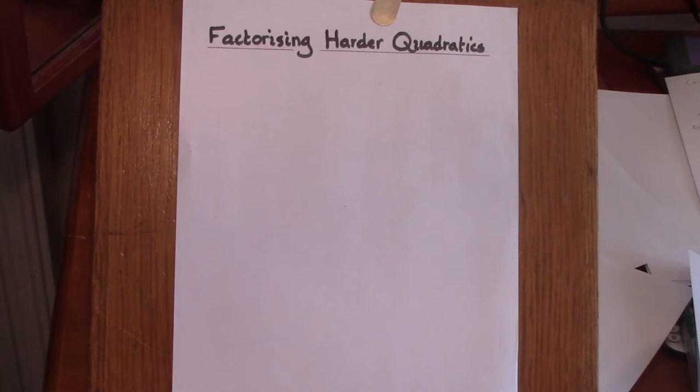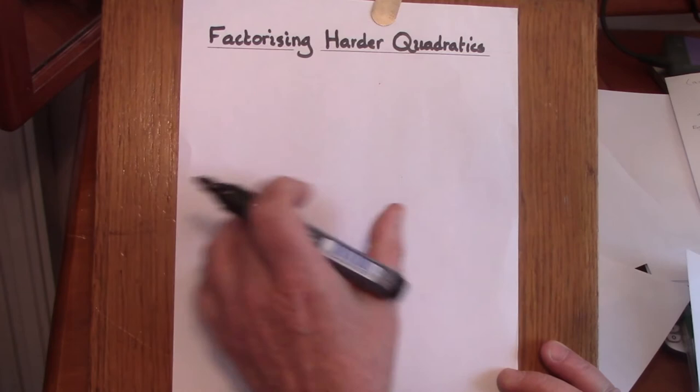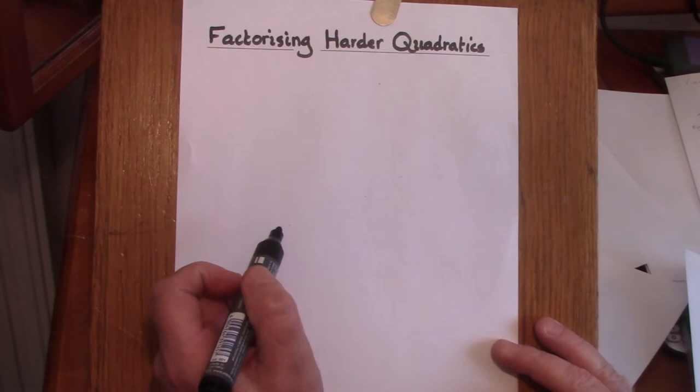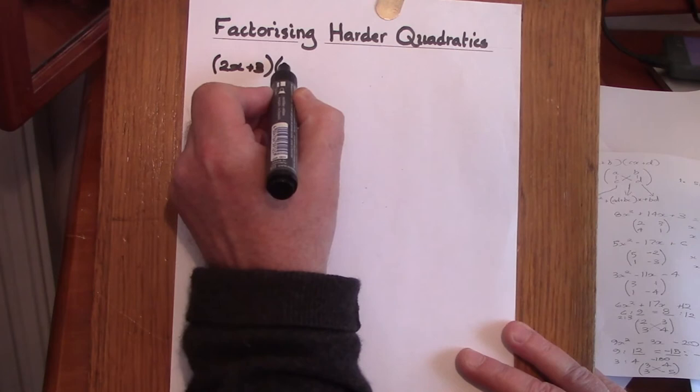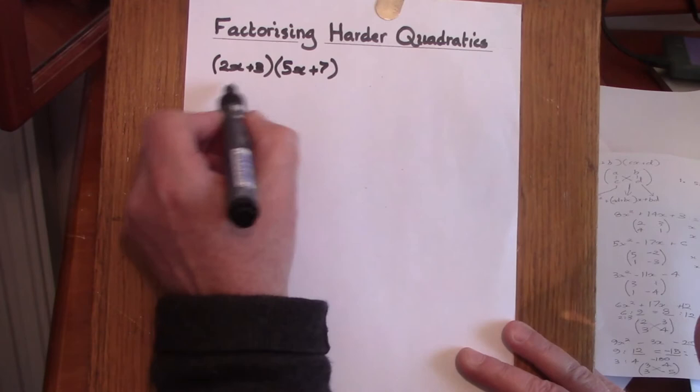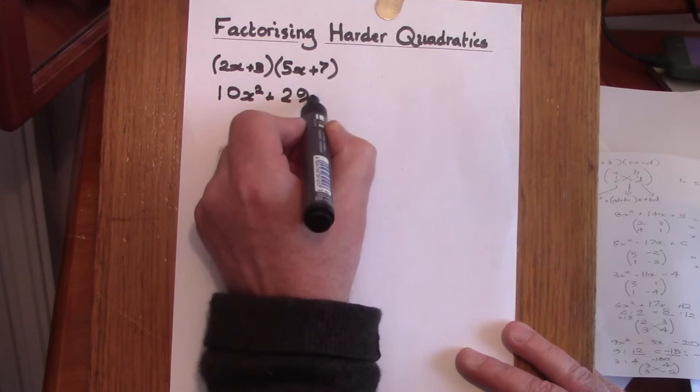Before we go on to the method, I'd like to look at an actual example of multiplying brackets together, because there are three particular properties which are worth noting. We'll start with the example (2x + 3) multiplied by (5x + 7). After expanding these brackets we find the answer 10x squared plus 29x plus 21.